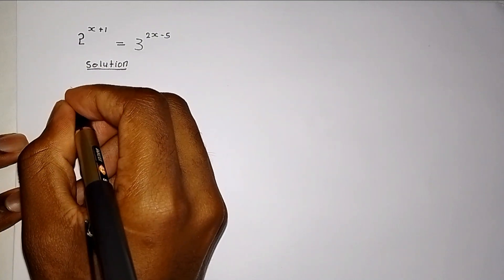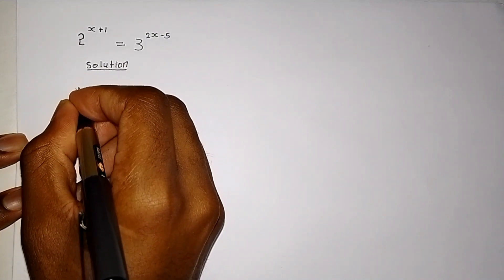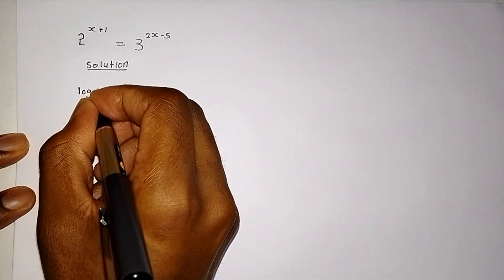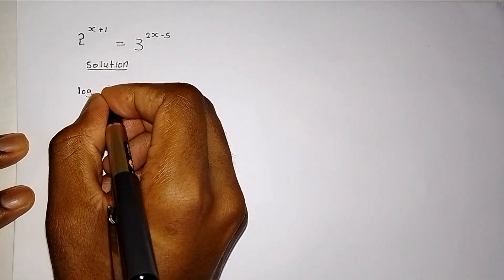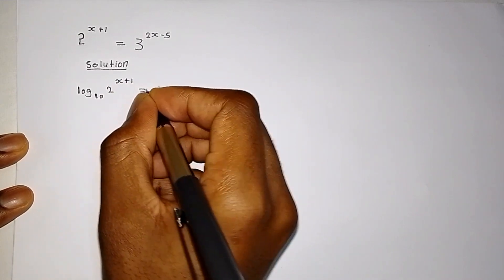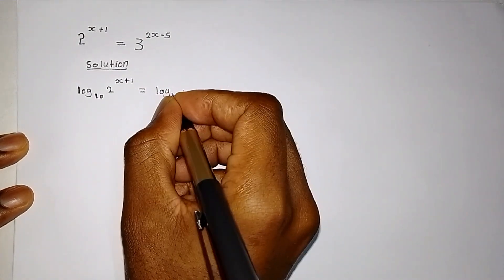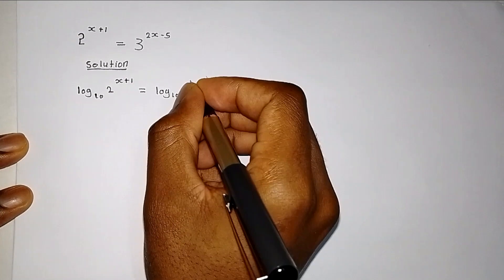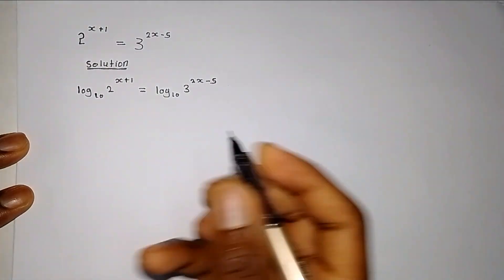First, we have to introduce logarithm to the base of 10. Now, log to base 10 of 2 raised to the power of x plus 1 equals log to base 10 of 3 raised to the power of 2x minus 5.